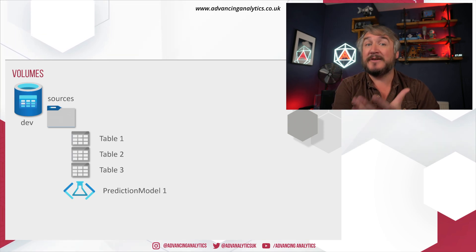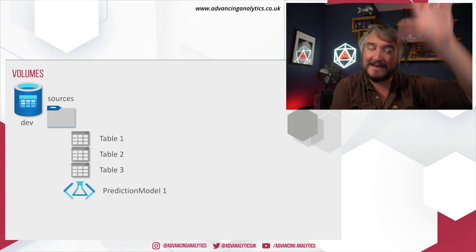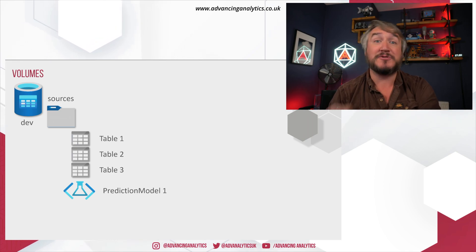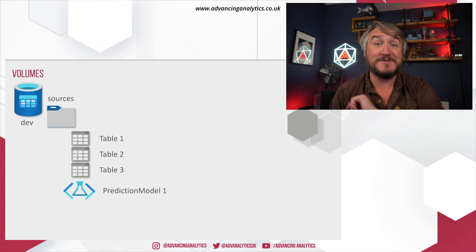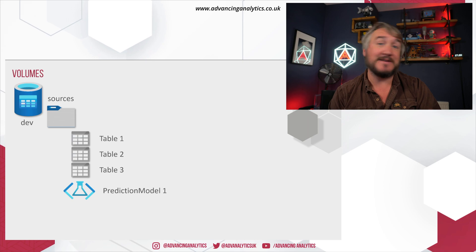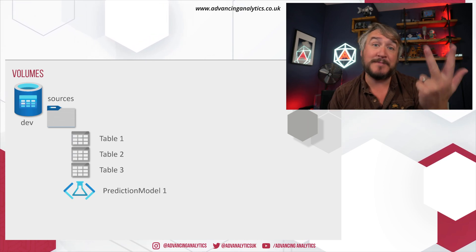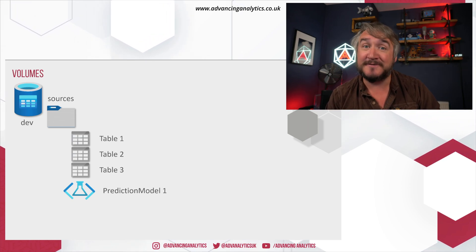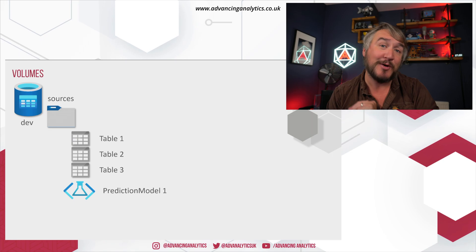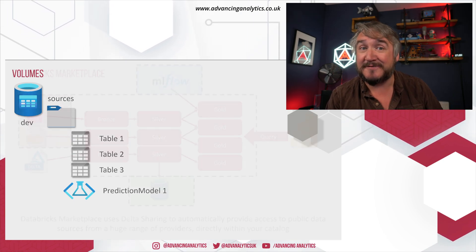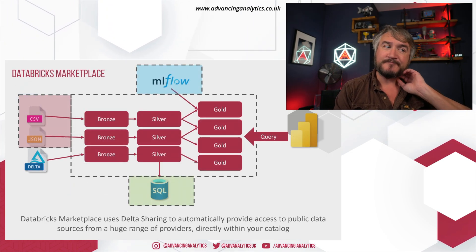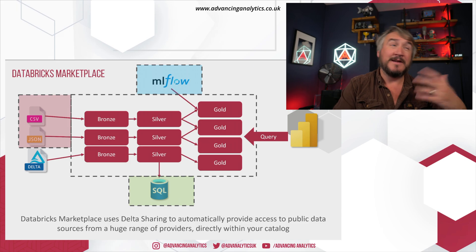Essentially, Unity Catalog's catalog view gives you just a list of objects. The object might be a delta table, a SQL Server table you've linked in, an unstructured volume, a machine learning model, or even a security function you've defined within there.